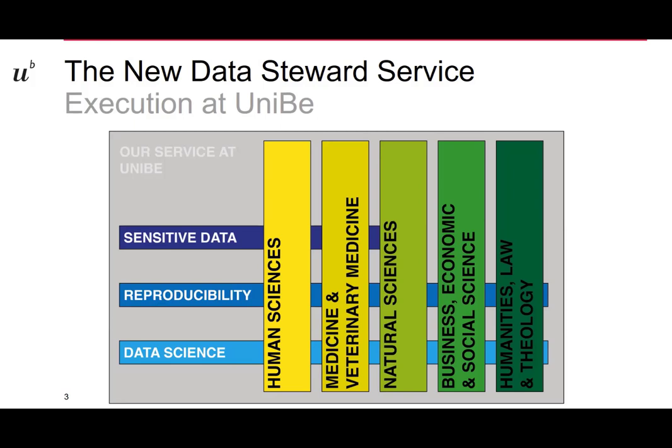There's also some infrastructure that supports these five pillars. And then we have cross-cutting topics like sensitive data, which is mostly important for human science and medicine; reproducibility, which I would say is the final goal of open research data; and data science, which nowadays touches basically every other research domain. Those are cross-cutting topics that push through these five pillars.